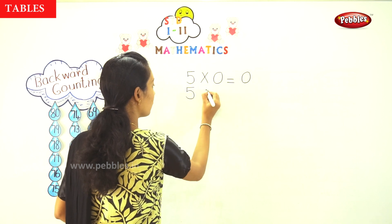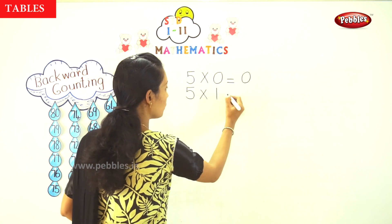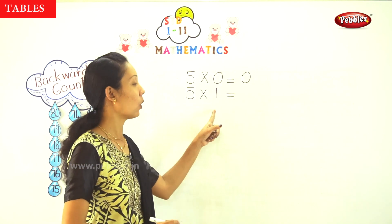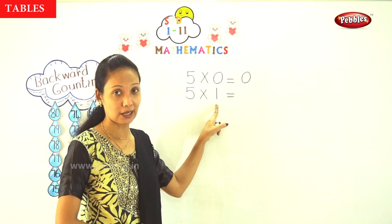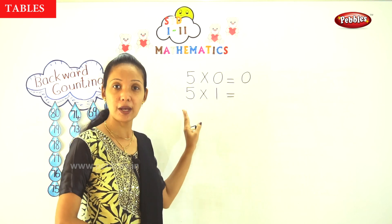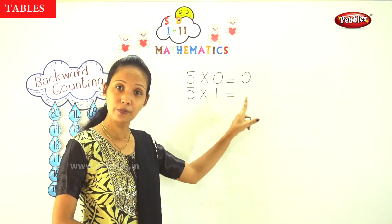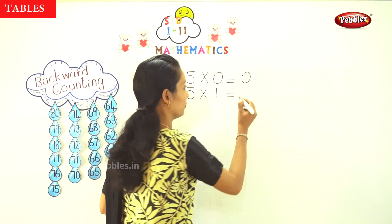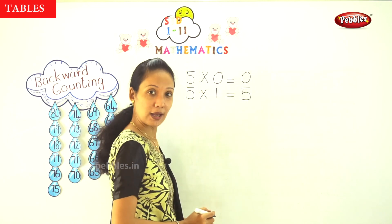Next: 5 into 1. That is 5 into 1. So 5 into 1 is equal to 5.